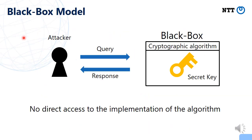This picture illustrates the usual black-box model, where we study the security of a cryptographic scheme or cryptographic algorithm. We assume that there is an attacker, and there is the black-box oracle of the target algorithm. The attacker may make some queries to the oracle, and the oracle returns responses. The important thing is we assume that the attacker does not have direct access to the implementation of the algorithm.